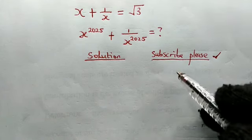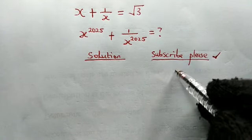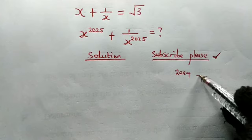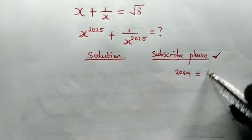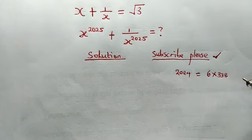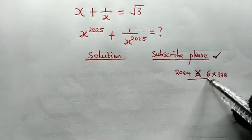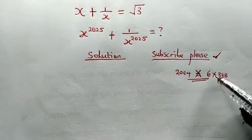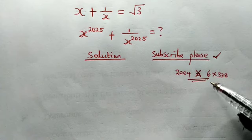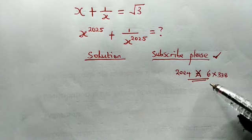In the previous video I made a very silly mistake by writing 2024 as 6 times 338, but you and I know that this is not true. So here I'm presenting a very nice method which is very accurate for solving this kind of problem.